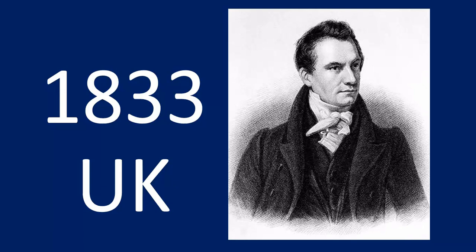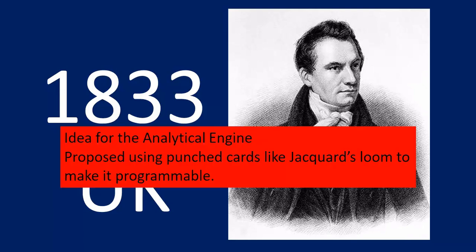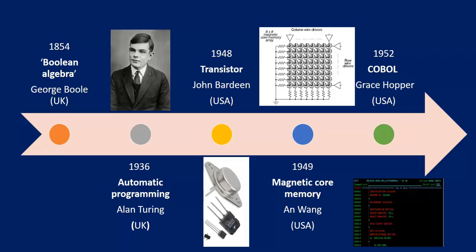In 1833 in the UK, Charles Babbage — the father of computers — designed a computer based on the textile loom. The idea for the analytical engine was proposed, using punch cards like the Jacquard loom to make it programmable. Next, in 1854, Boolean algebra came, introduced by George Boole in the UK.